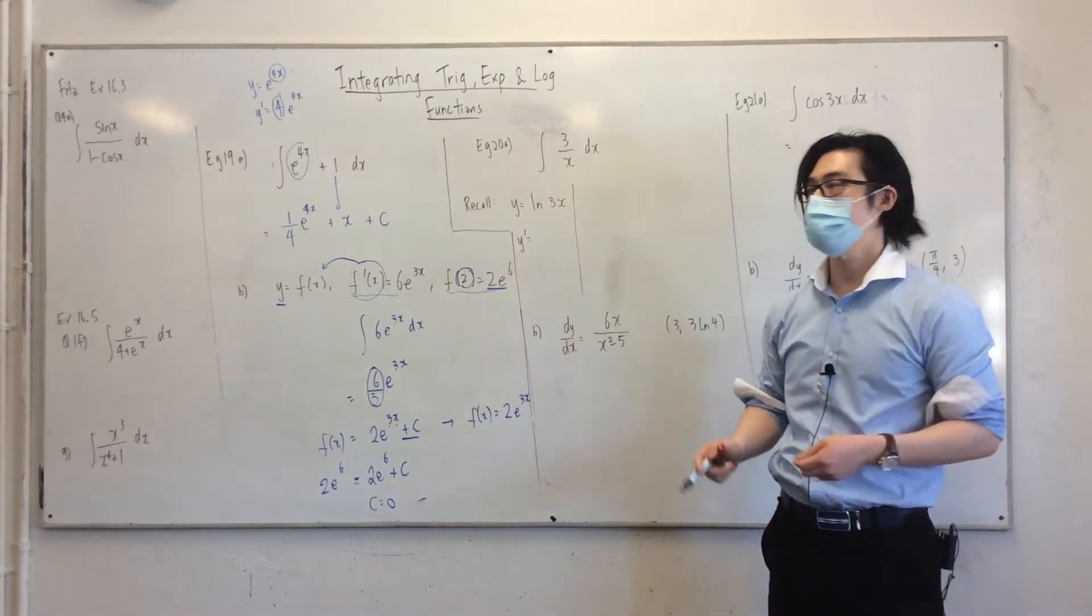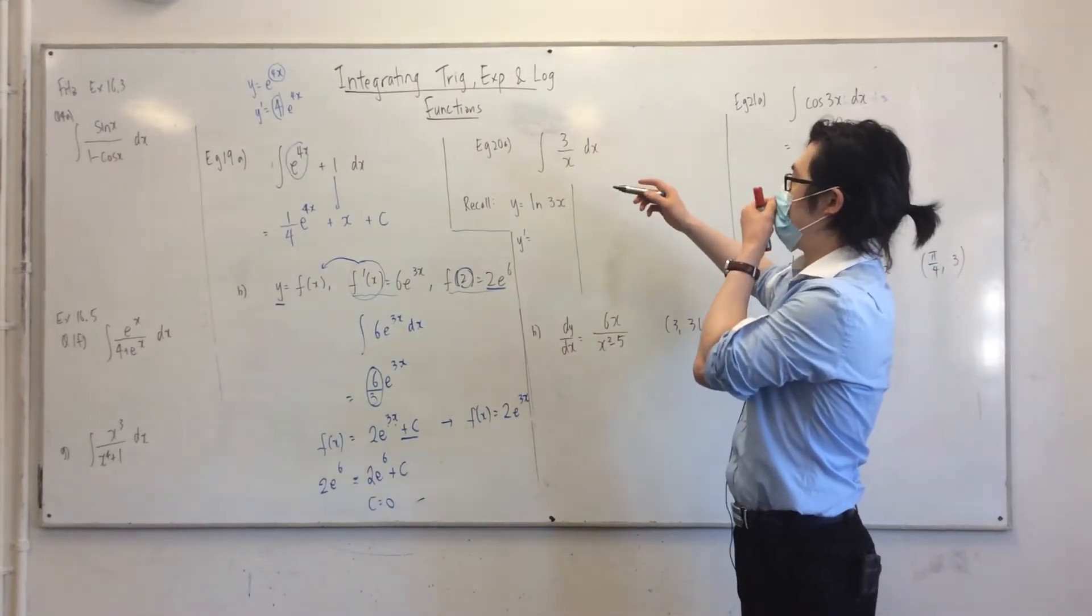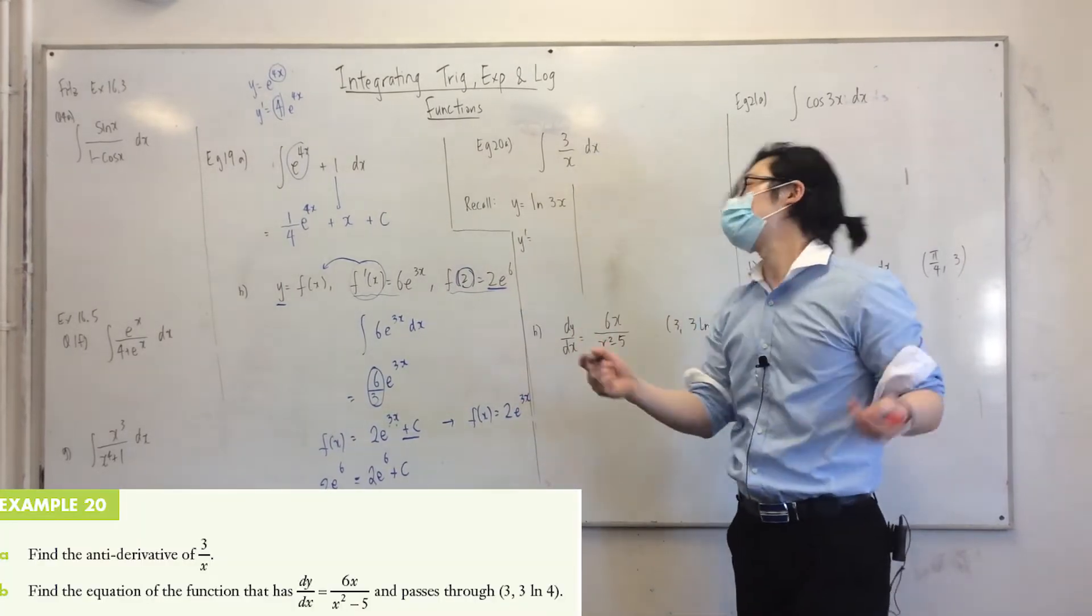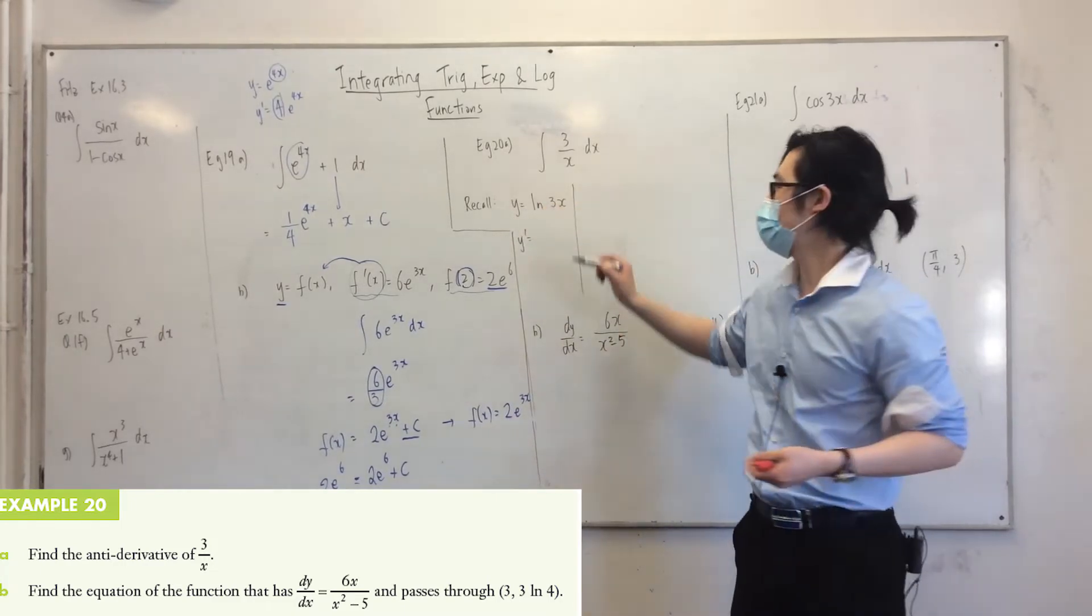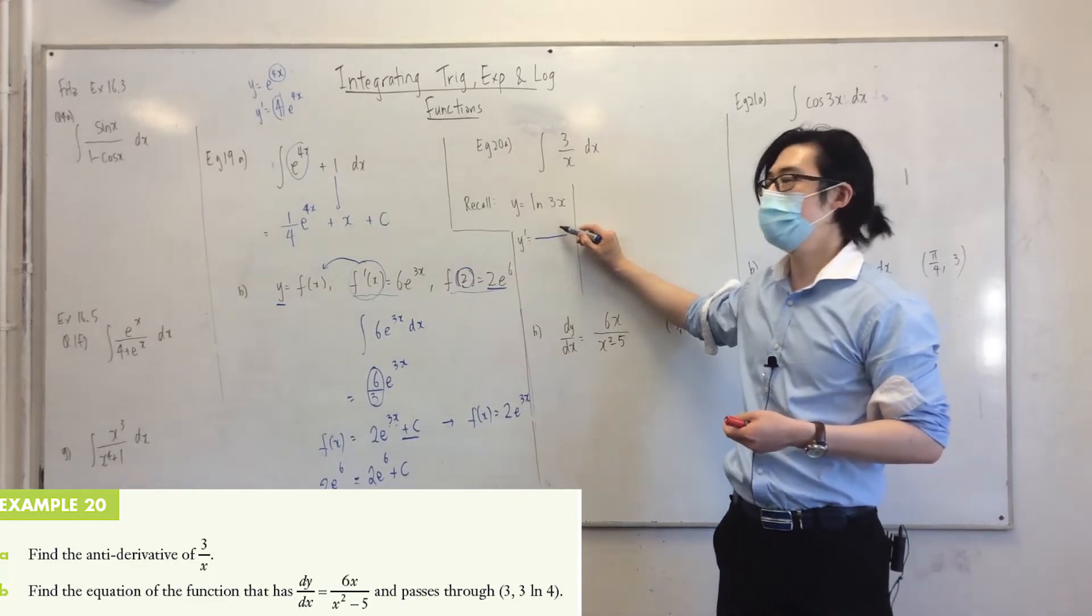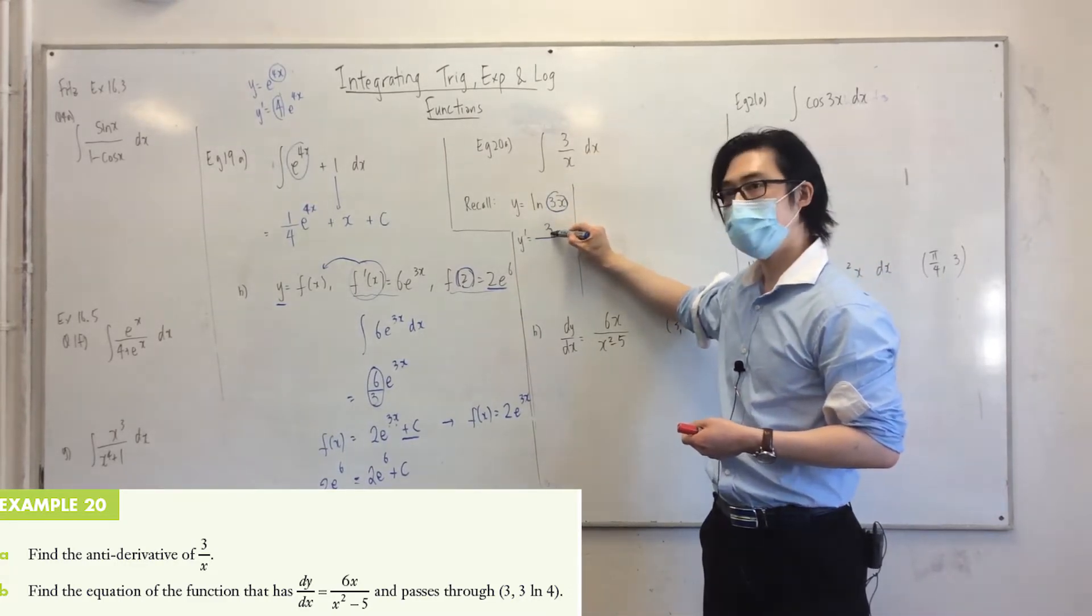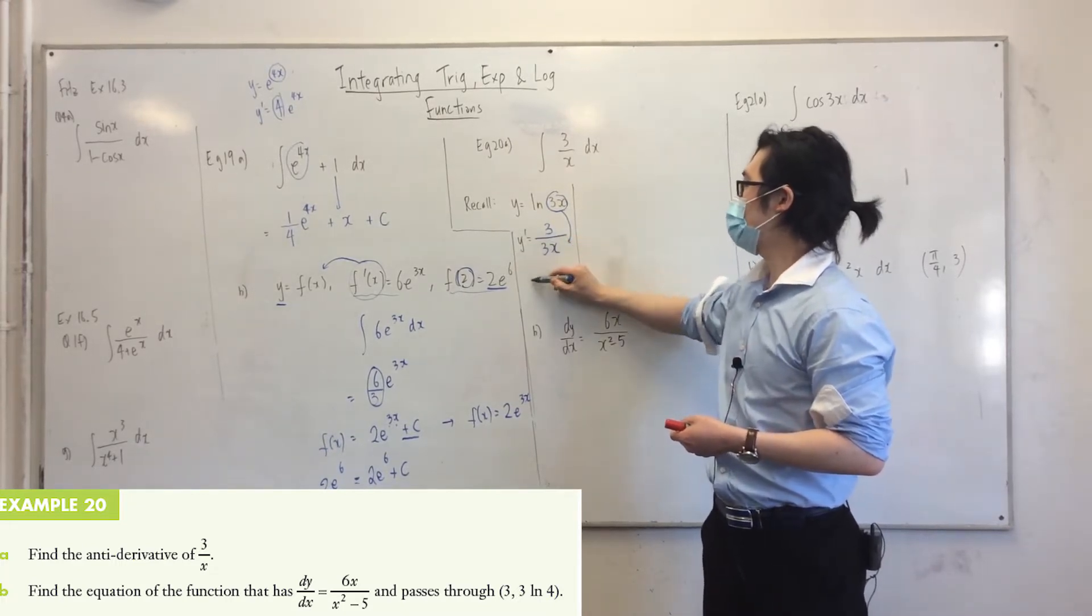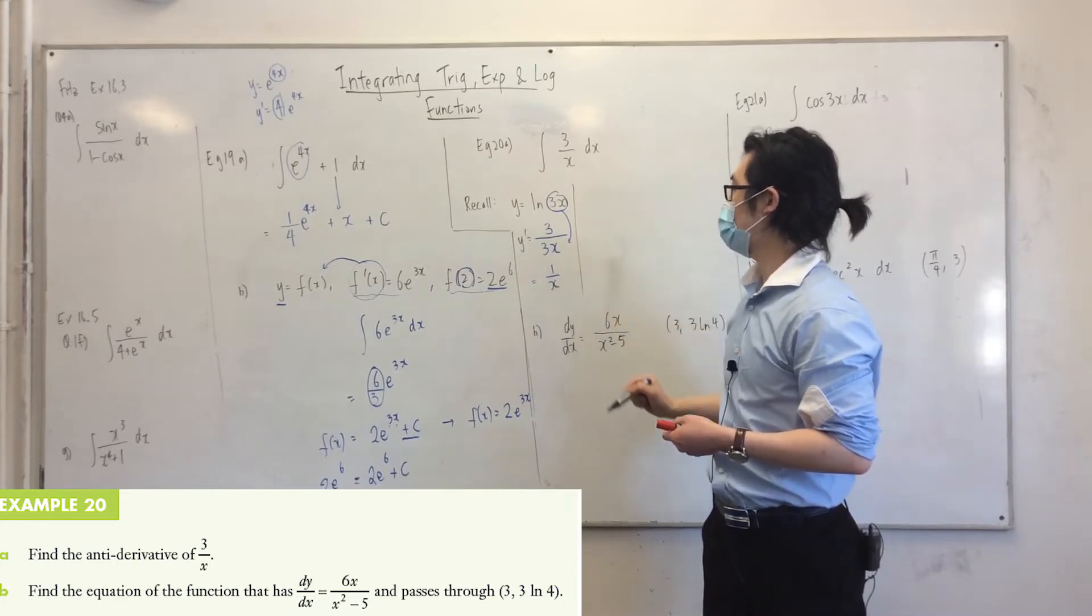So that's how you integrate the exponential function. Once again, the rule is in your formula sheet. Now, let's integrate something like this. If you get a fraction - before I do that, girls, if I want to differentiate logarithmic function, remember, what goes on top? The original or the differentiated? Differentiation of 3x comes on top, which is 3. And the original comes at the bottom. So in this case, that's just 1 over x, right?